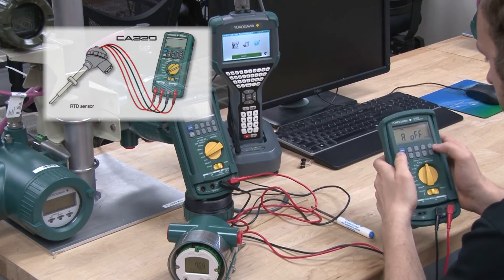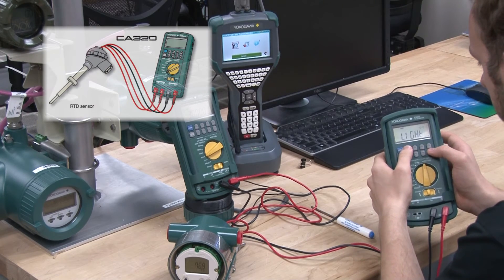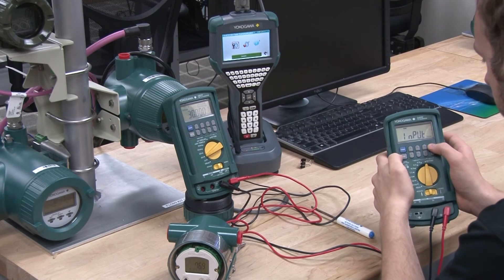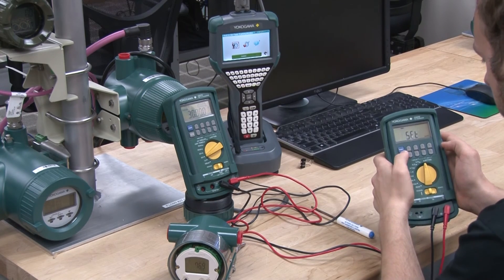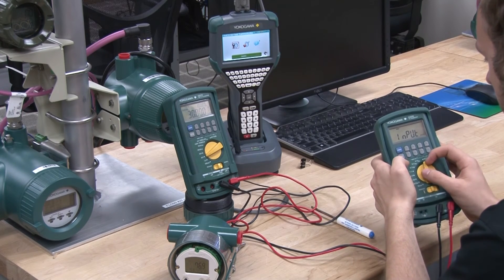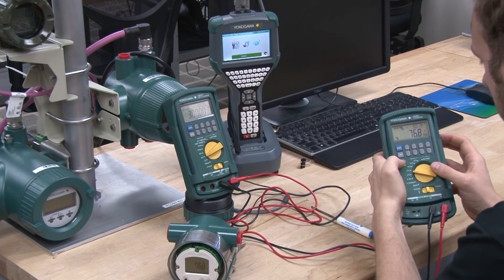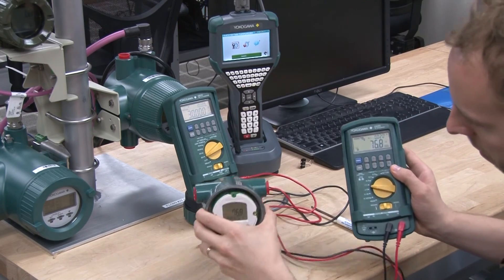The CA330 also measures output of RTD sensors as a thermometer. RTD calibrators are used to check transmitters, controllers, recorders, probes, and much more by measuring the resistance of a metal with changes of temperature in its area.